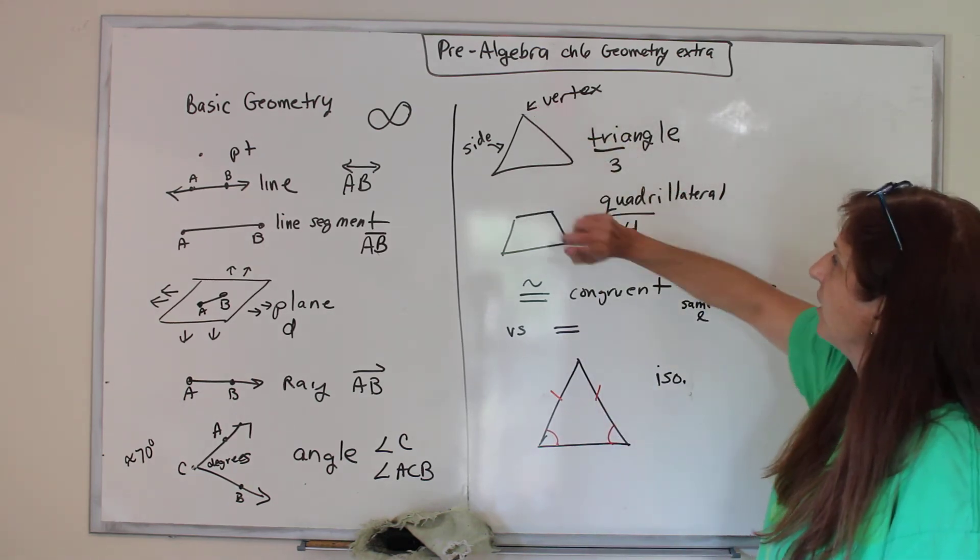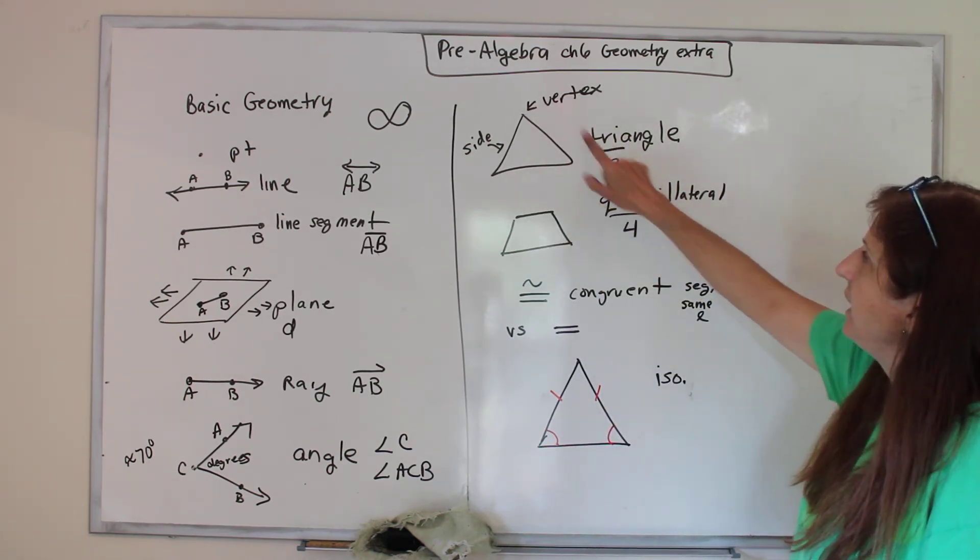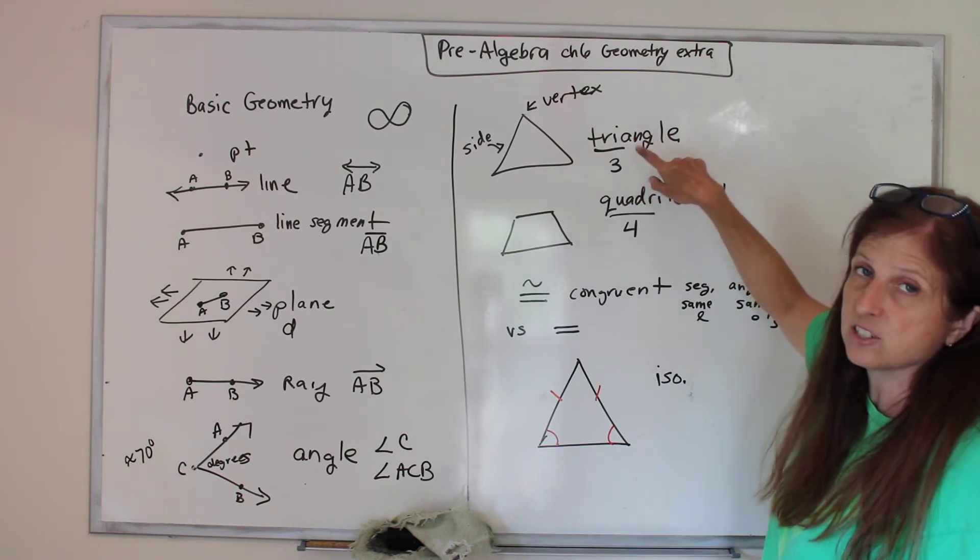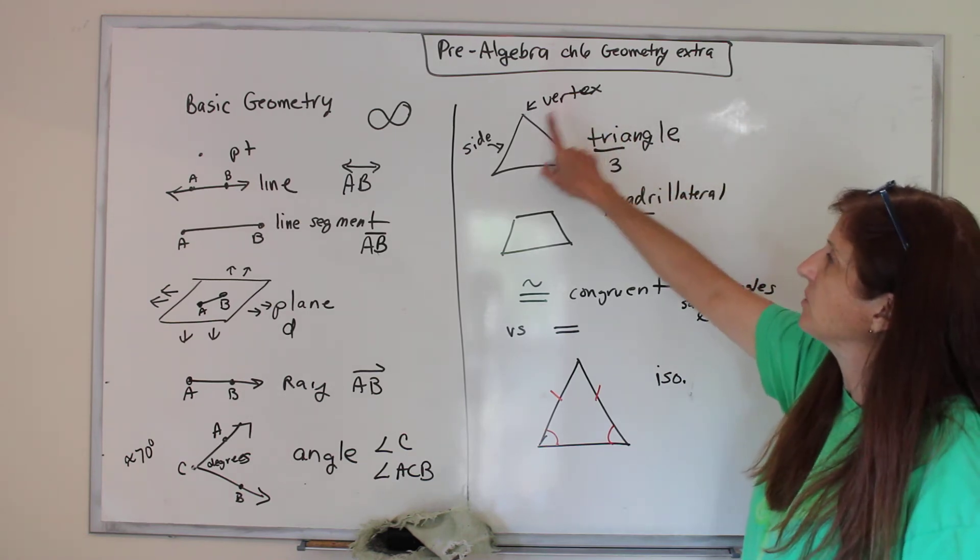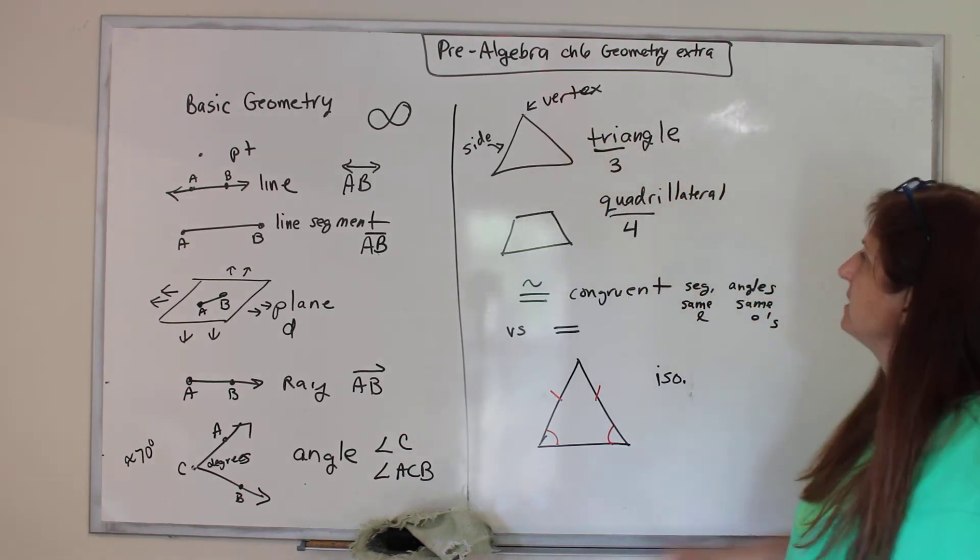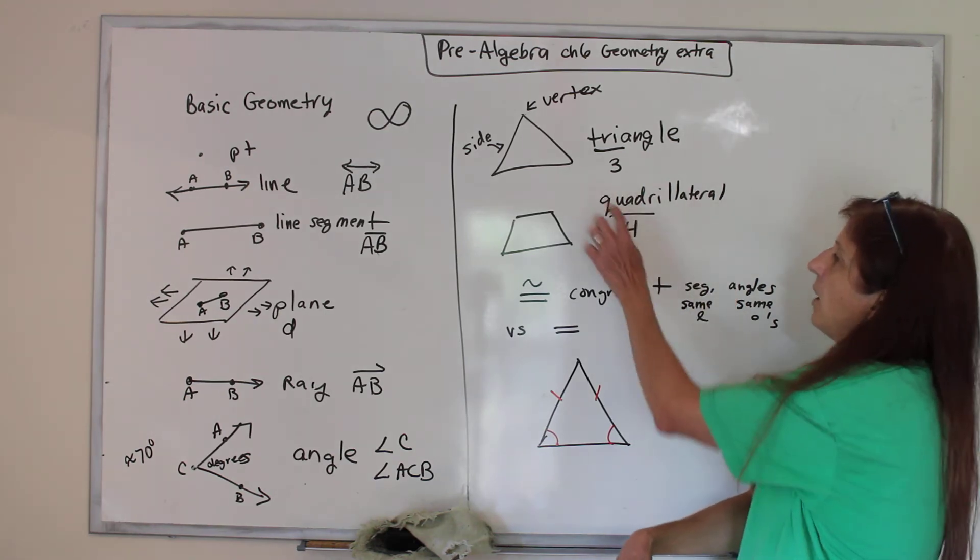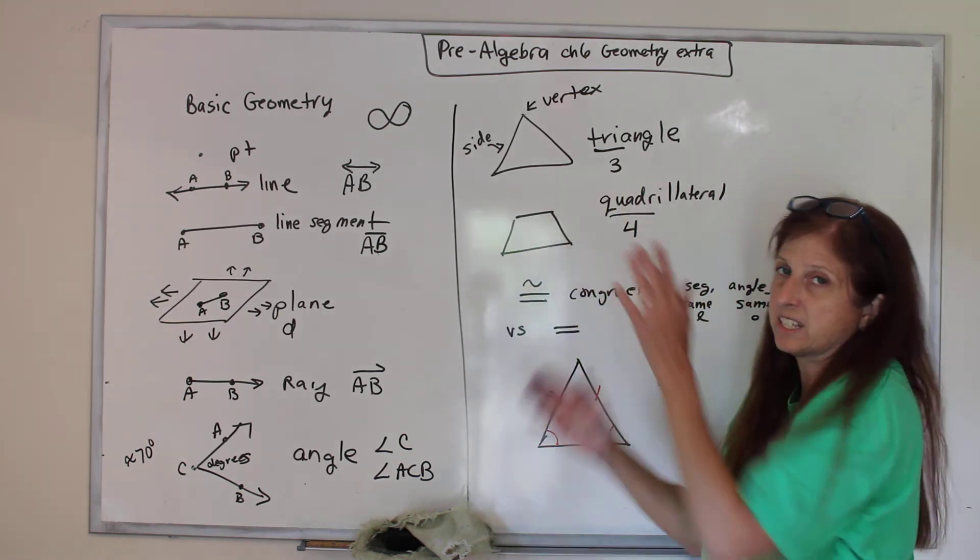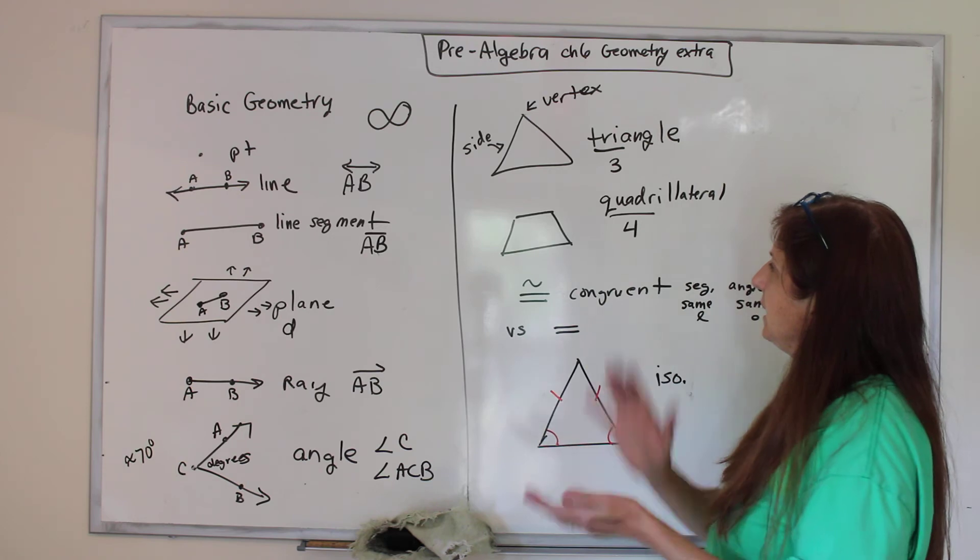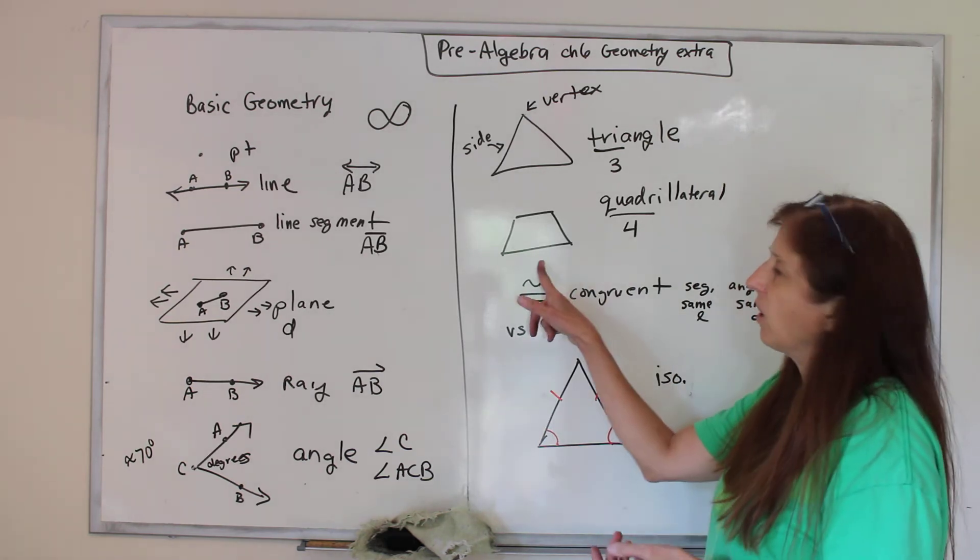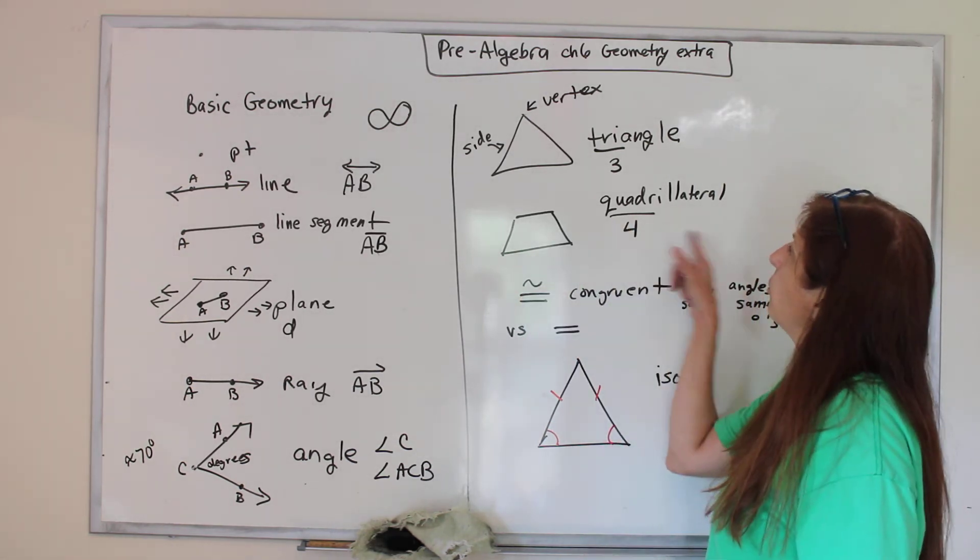All right, so this is a triangle. Tri means three. It's got three angles, hence tri-angle. The pointy part is vertex. The flat part are the sides. A quadrilateral, quad means four. It has four sides. It could be a square. It could be a rectangle, or it could look like that. They're all quadrilaterals.